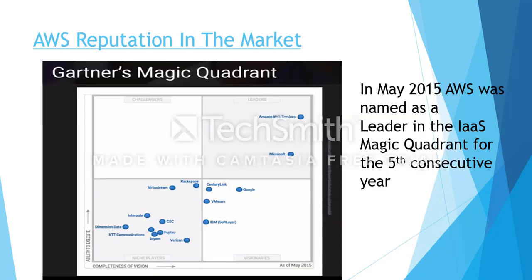What is AWS's reputation in the market? According to Gartner's Magic Quadrant — the most trusted industry study — AWS has always led the market. In May 2015, AWS was named market leader in the IaaS Magic Quadrant for the fifth consecutive year, and they remained the market leader in 2017 as well. Microsoft is following AWS, and other public cloud service providers like Google Cloud, VMware, and IBM are in the visionary or niche player categories.